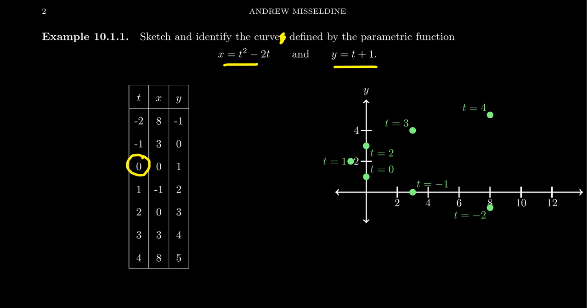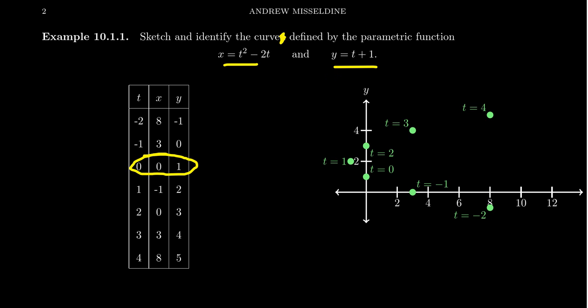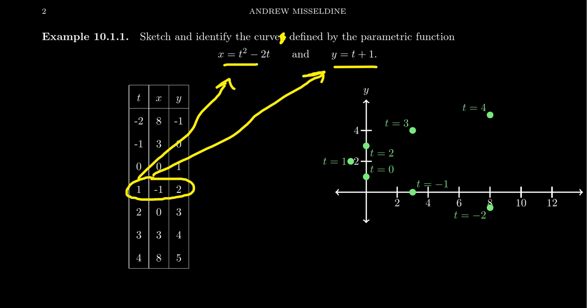If we take the parameter t equal to 0: x equals 0 squared minus 2 times 0, which is 0; and y equals 0 plus 1, which is 1. So when t equals 0, we get the point (0, 1). If we try t equals 1: plugging into x gives 1 minus 2, which is negative 1; plugging into y gives 1 plus 1, which is 2. That produces the point (−1, 2).